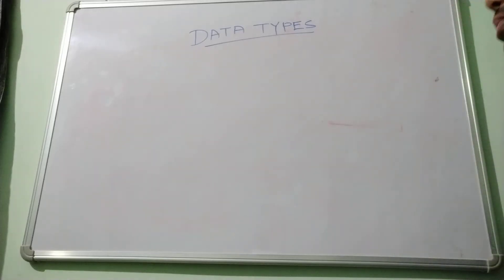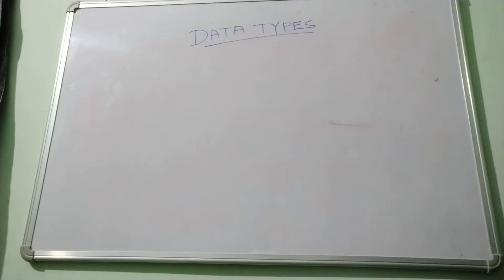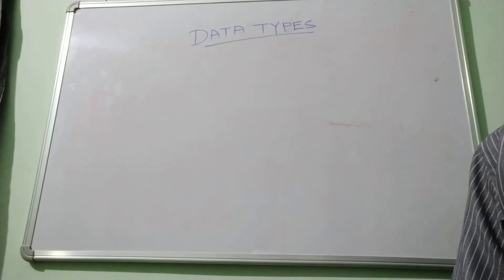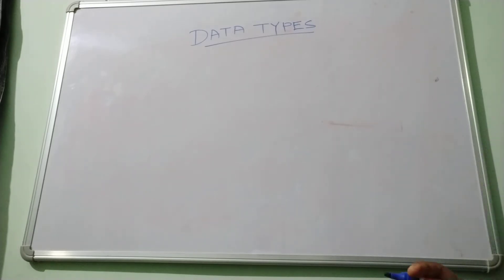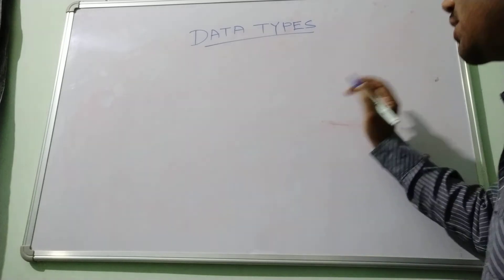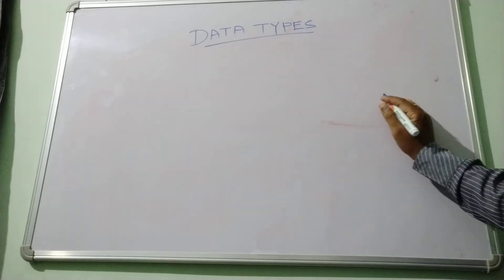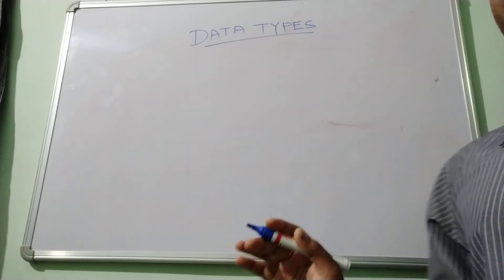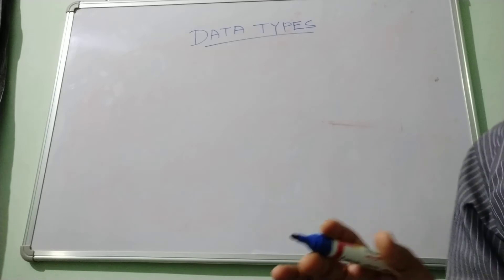Good morning friends. Today we are going to present on the data types in GIS. Data is one of the basic important components in GIS, where we can say about 80% of the task is going to be completed if you collect the data properly.